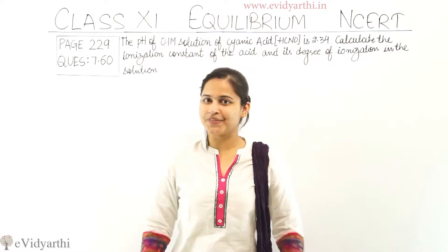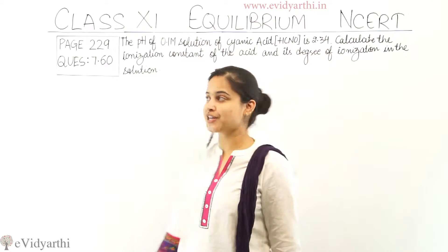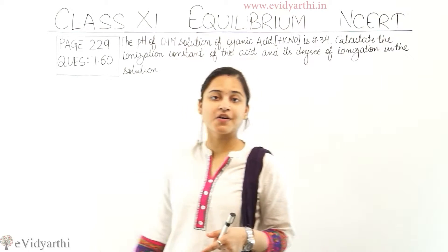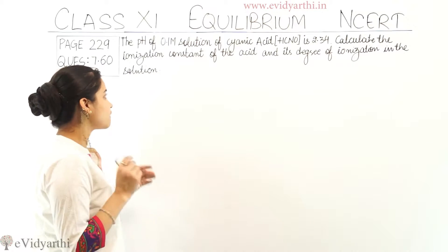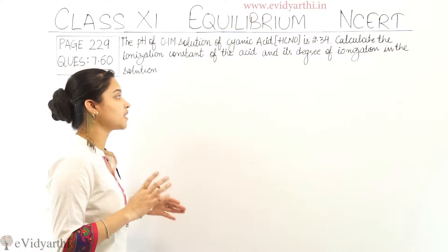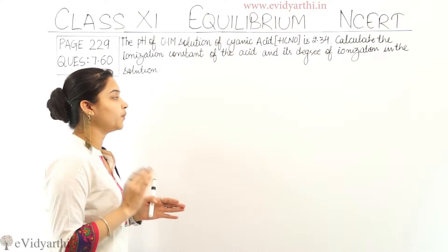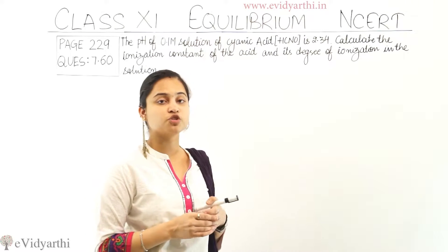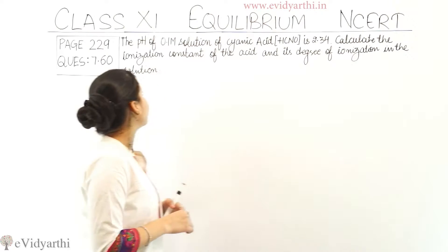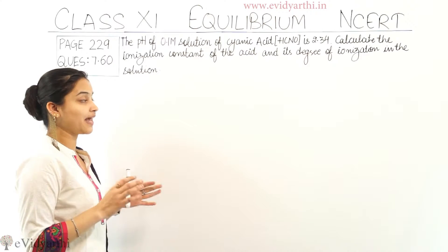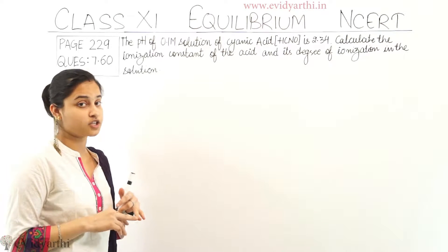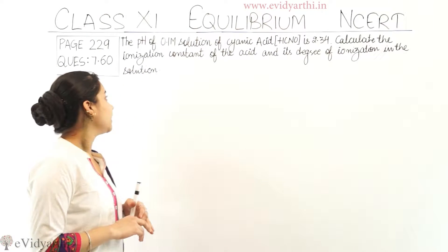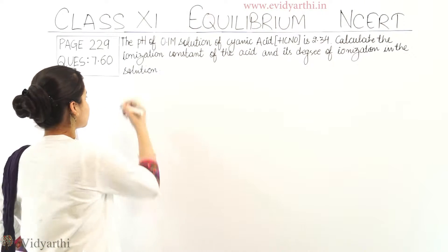Hello guys, I'm Rocky and in this session I'm going to explain question number 60 on page number 229. The question is: the pH of a 0.1 molar solution of cyanic acid HCNO is 2.34. Calculate the ionization constant Ka of the acid and its degree of ionization in the solution.